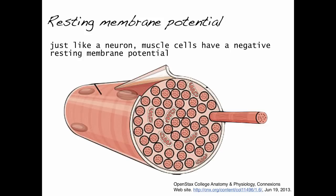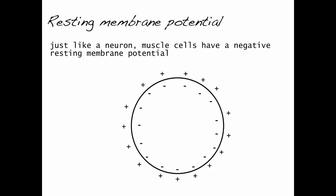So as a review, just like a neuron, muscle cells have a negative resting membrane potential. What this means, if I simplify this diagram by outlining the plasma membrane, that inside skeletal muscle there is a negative voltage and outside the membrane there is a positive voltage.